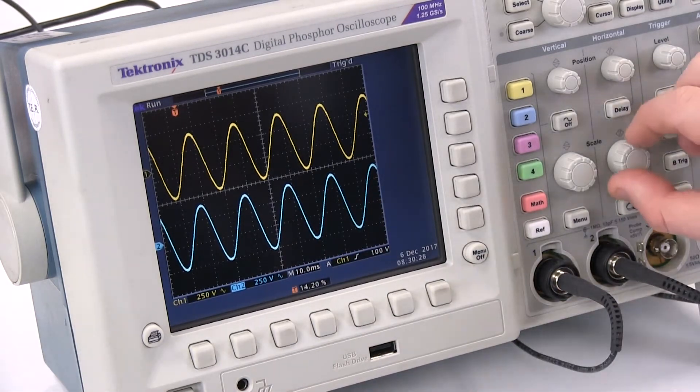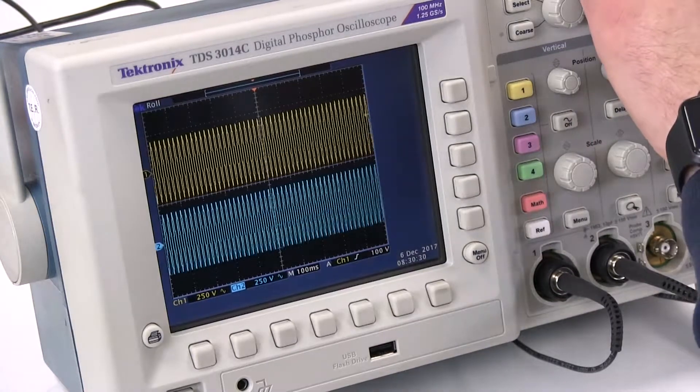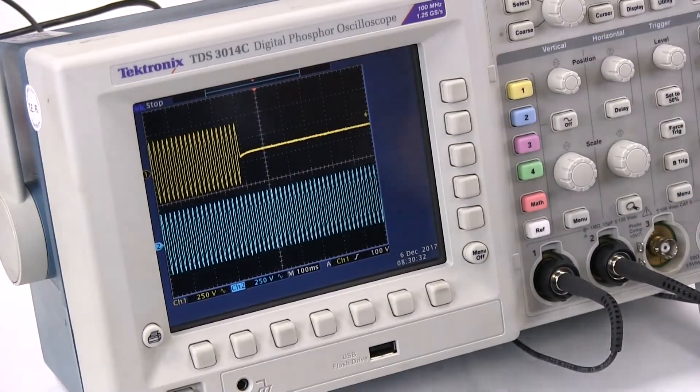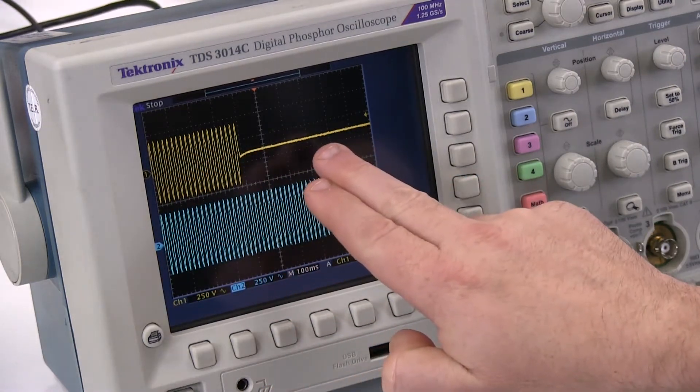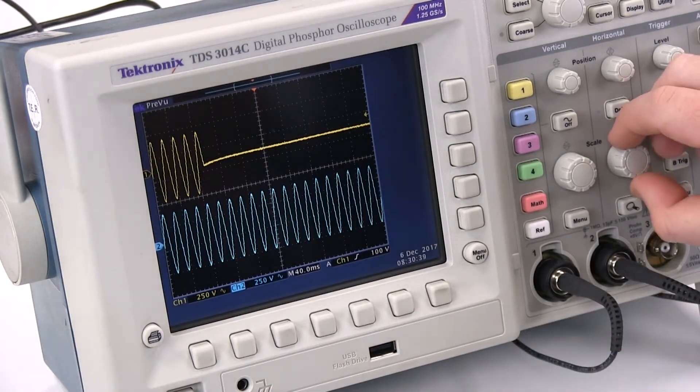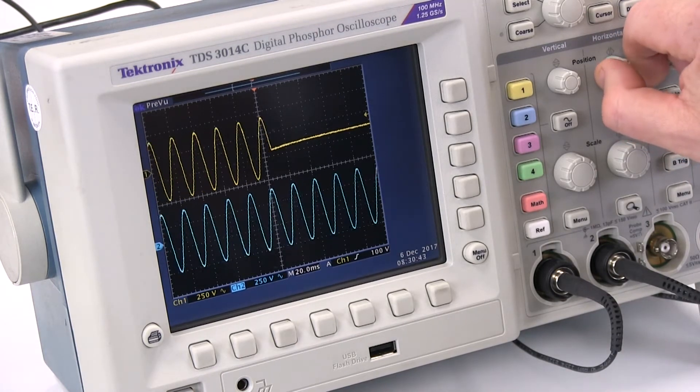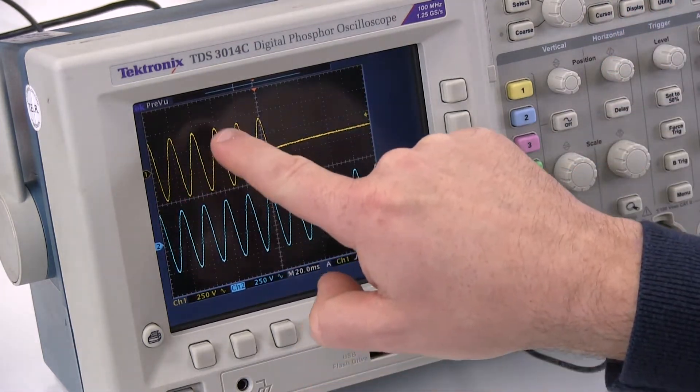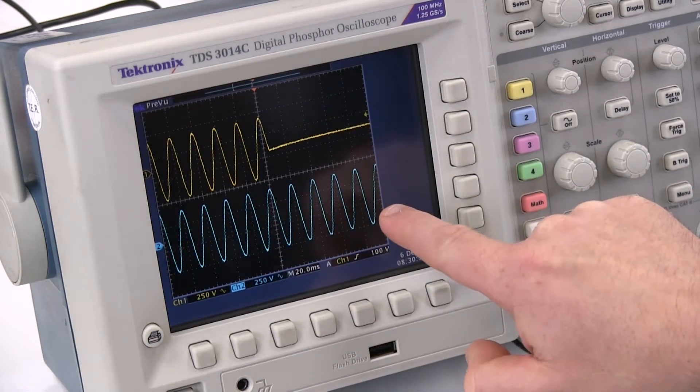Now if I slow the trace down and then fail the main supply to the UPS, I can stop the trace and effectively capture the moment when the main supply fails. If I zoom into that moment, you can see that even though the main supply has failed, the output from the UPS system remains completely unaffected.